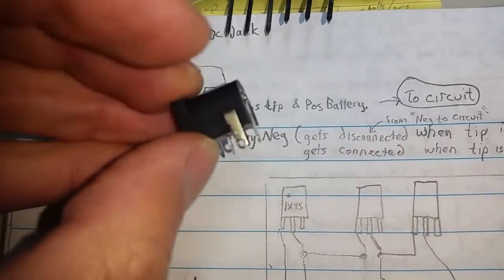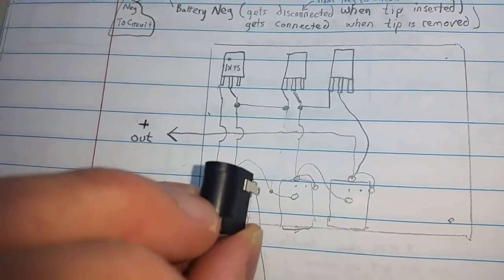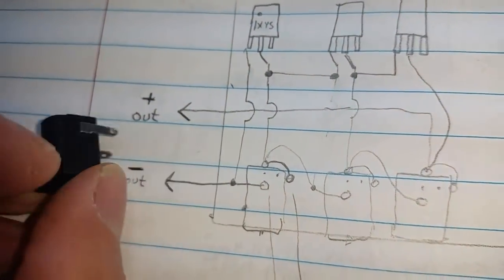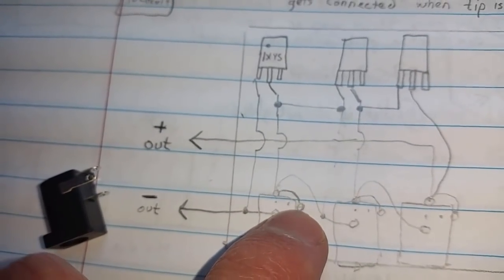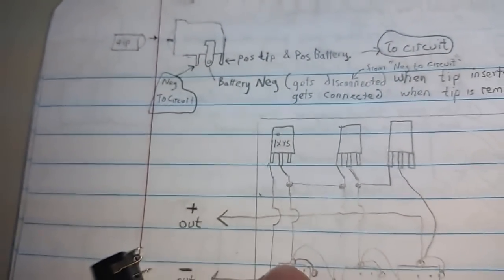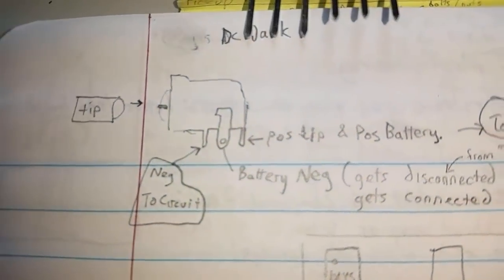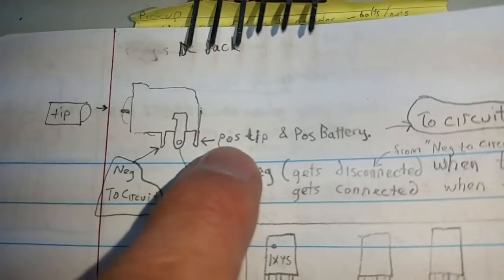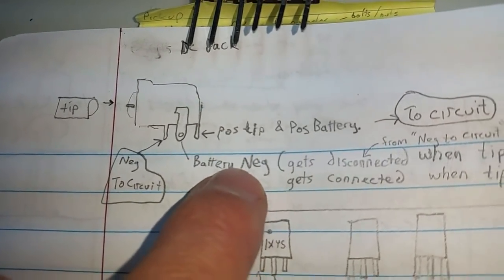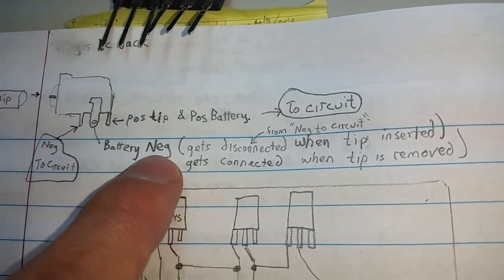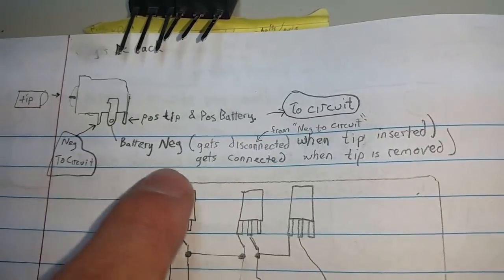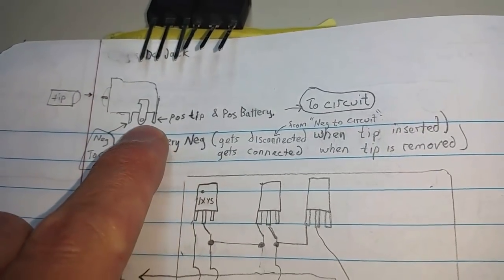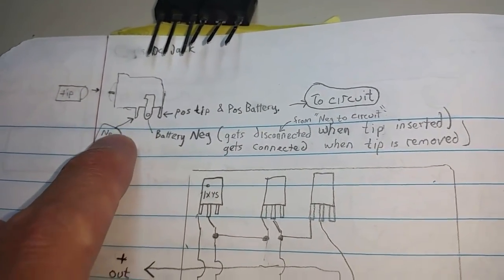So here is the orientation in this picture and it comes over to this orientation in this picture, where the three little tabs are negative from the battery and positive tip right up here. So this one is always connected to the circuit—the negative—and this one is always the positive to the circuit. This one is the battery negative and it gets disconnected when the tip is inserted. It's disconnected from the circuit here but it gets connected when the tip is removed.